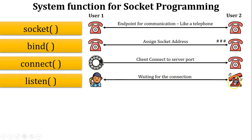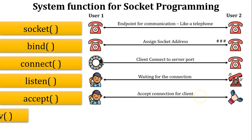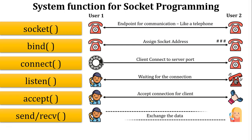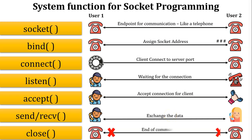The next function is accept. Whenever user2 picks up the receiver, it means accepting the call, so the accept function means the server accepts the connection. The next function is send or receive — after user2 accepts the call, user1 and user2 communicate and exchange information, so send and receive means exchanging data between client and server. The last function is close — after exchanging information, user1 and user2 hang up the receiver, meaning end of communication, so close means closing the connection.